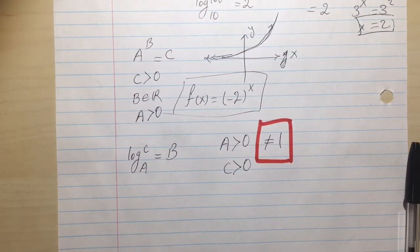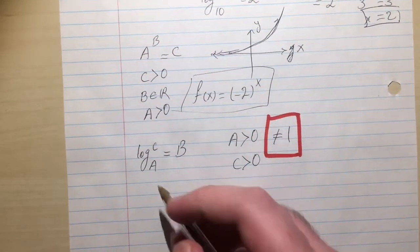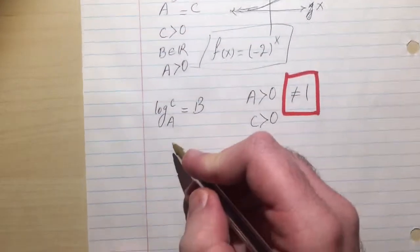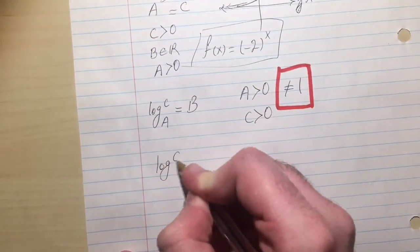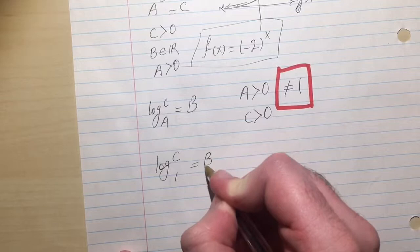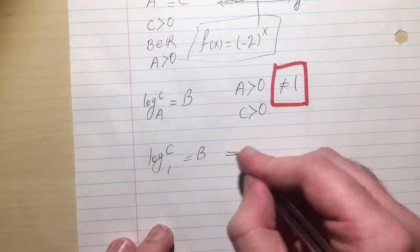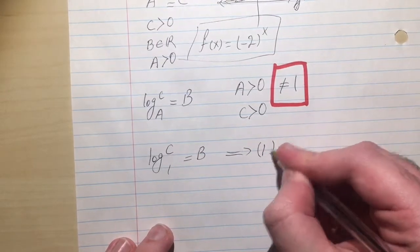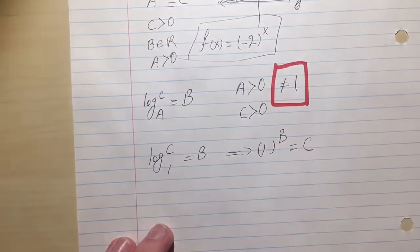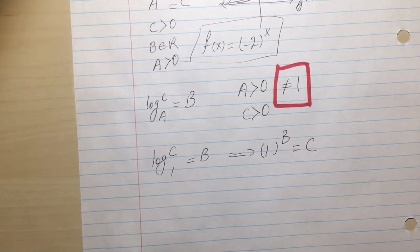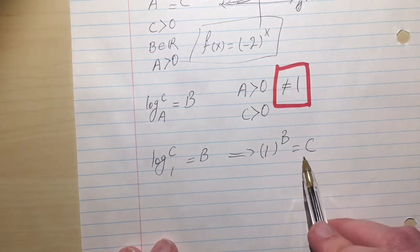Imagine I had something like this: log C base 1 equal to B. Another way of writing it could be 1 to the B is C.